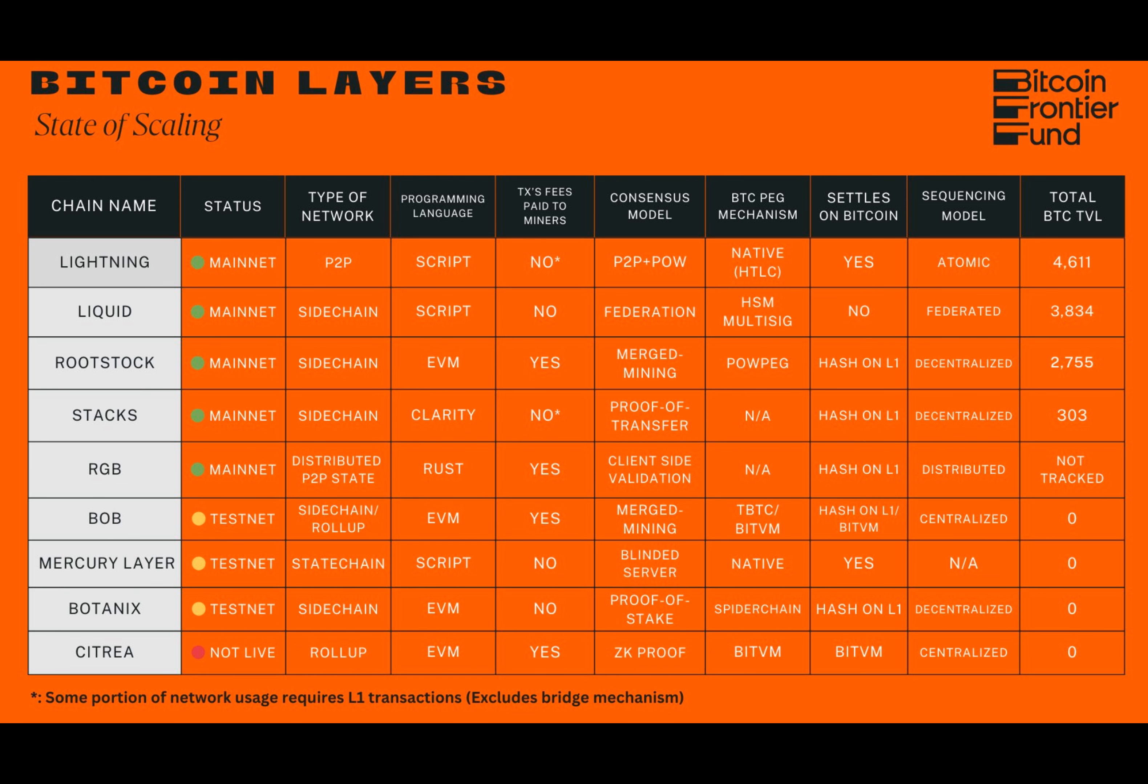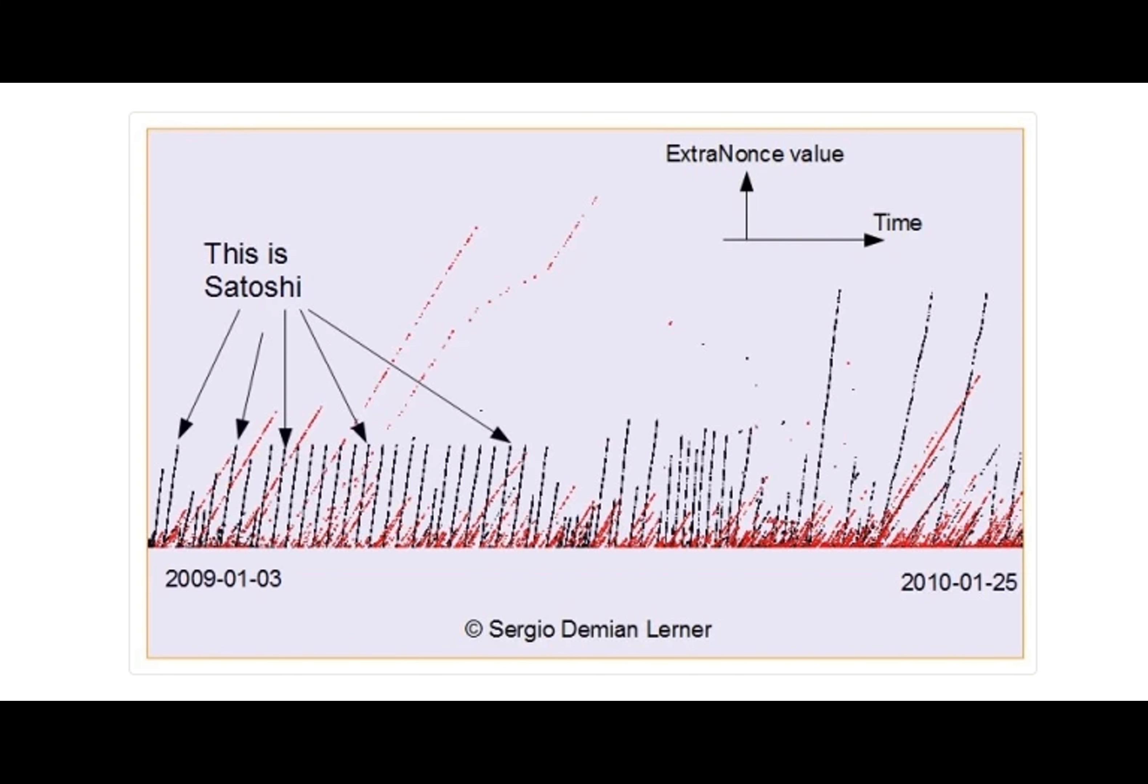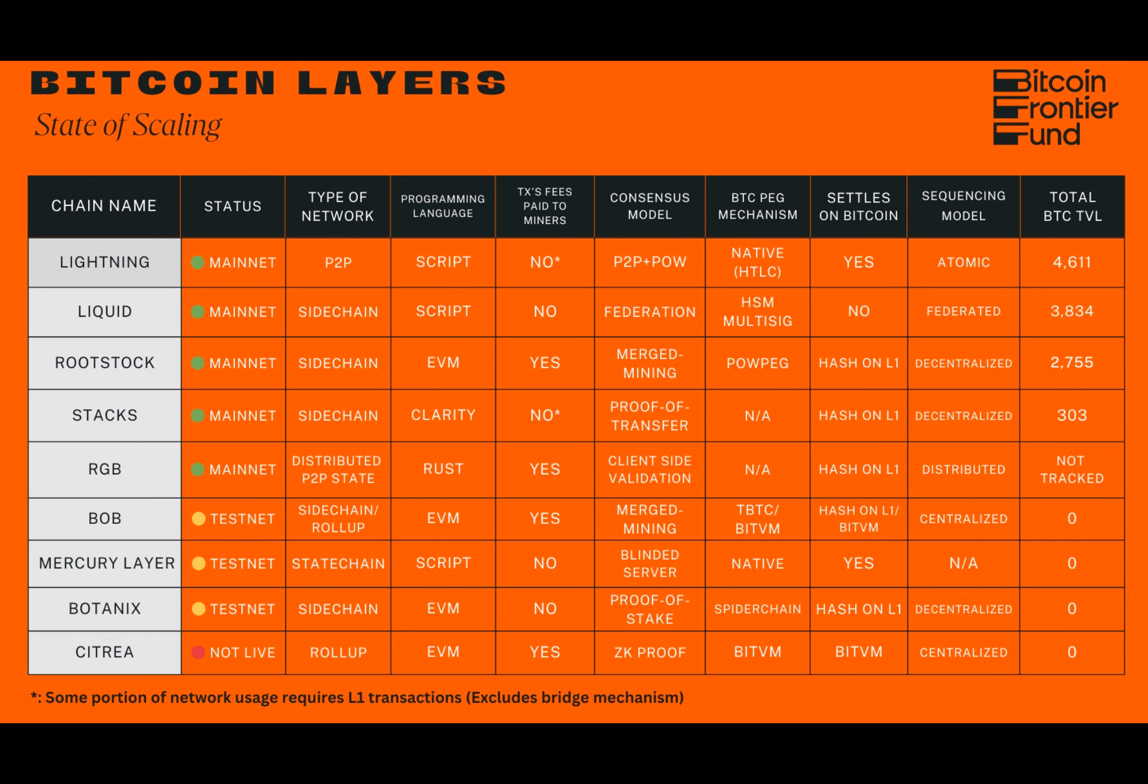BitVMX, inspired by Robin Linus' BitVM project, is backed by Rootstock Labs, a major Bitcoin layer 2 protocol. The project aims to create an open-source, peer-reviewed, sidechain-agnostic framework for developing Bitcoin-based programs.